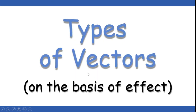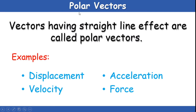We can also differentiate vectors on the basis of the effect they cause. The first type is polar vectors — vectors having a straight-line effect are called polar vectors. For example, displacement happens in a straight line, hence it is a polar vector. Velocity, acceleration, and force are also polar vectors because the effect of these vectors is in a straight line.